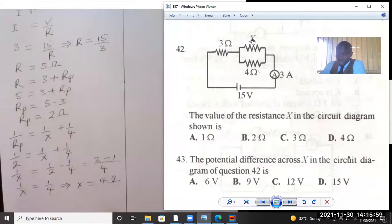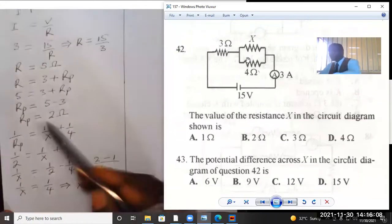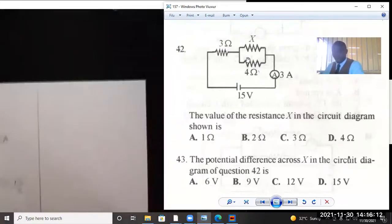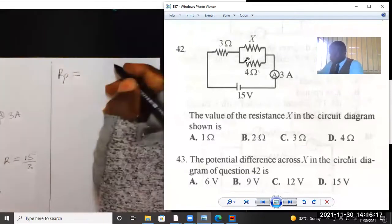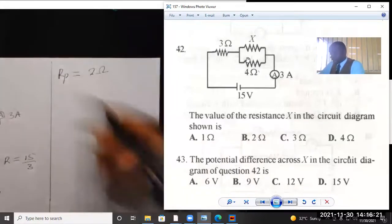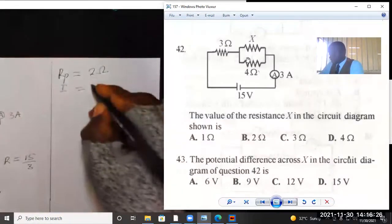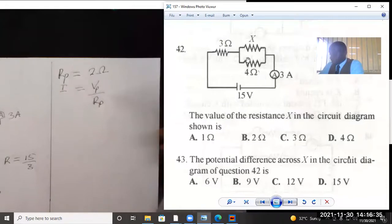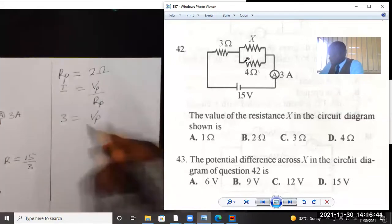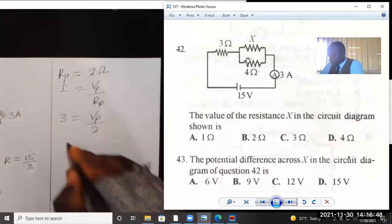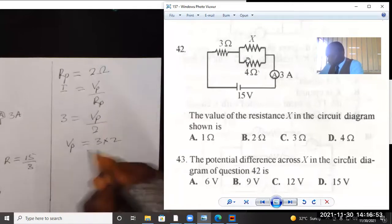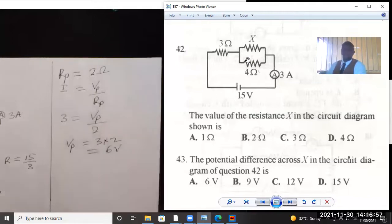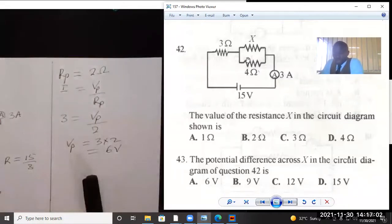So the potential difference across 4 ohms is the same as the potential difference across resistor X. We are going to apply Ohm's law once again. RP, which we calculated, is 2 ohms. The current is equal to the potential difference across the resistor in parallel, VP, over RP, the effective resistance. The current flowing is the main current in the circuit, which is 3 amperes. VP is unknown, RP is 2. So from here we can make VP the subject of the formula: 3 times 2, which is 6 volts. So question 43, the potential difference across X is 6 volts.